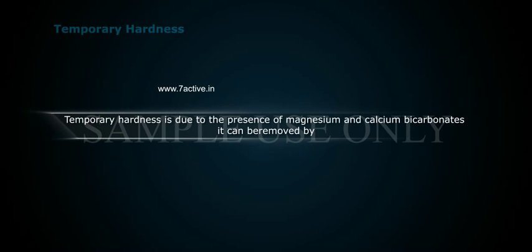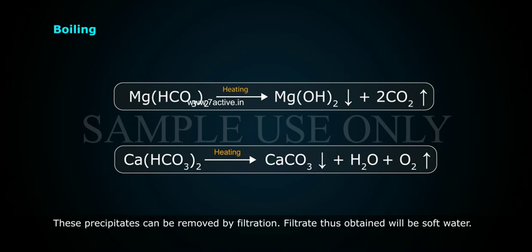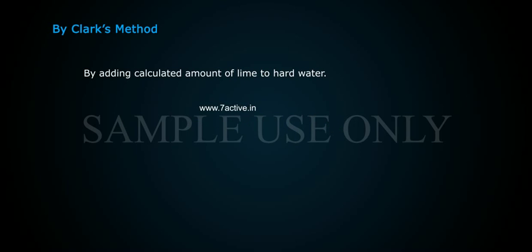Temporary hardness is due to the presence of magnesium and calcium bicarbonates. It can be removed by boiling. During boiling, the soluble magnesium bicarbonate is changed to insoluble magnesium hydroxide, and calcium bicarbonate is changed to insoluble calcium carbonate. These precipitates can be removed by filtration, and the filtrate obtained will be soft water.